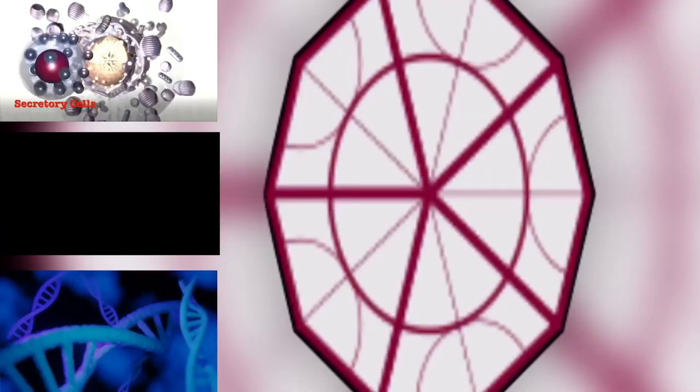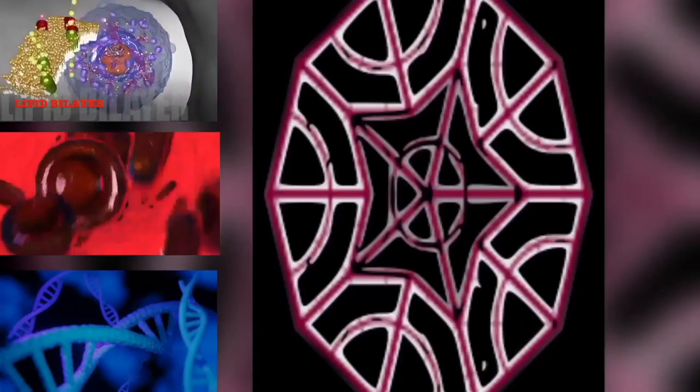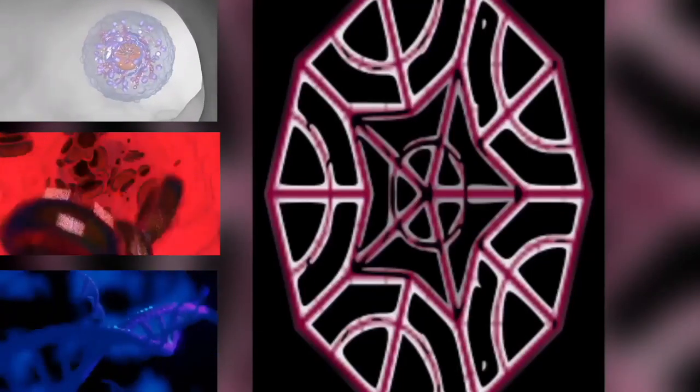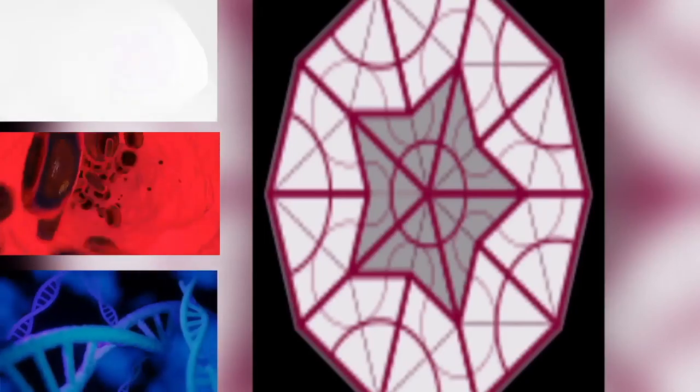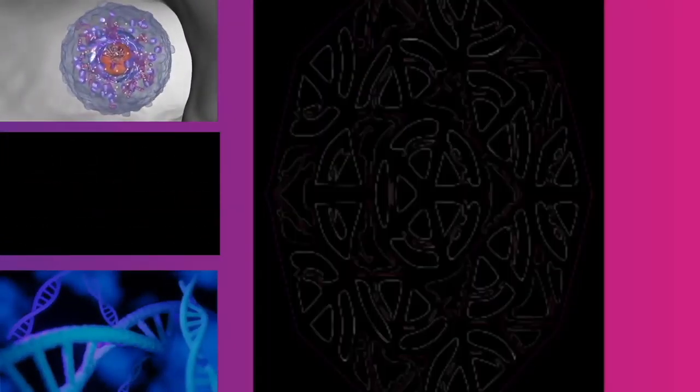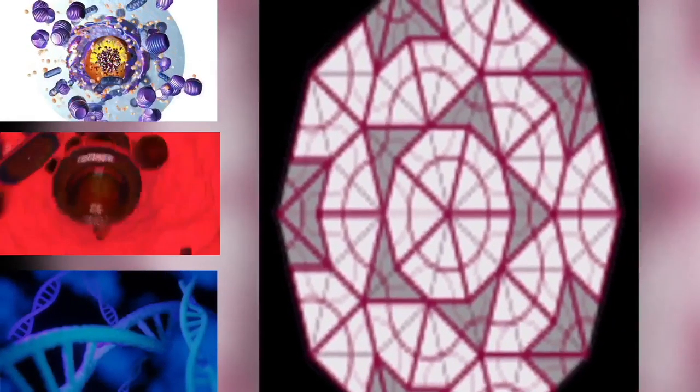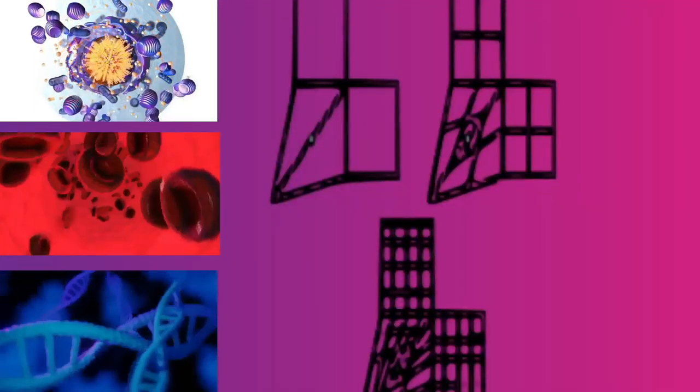The cells of higher plants, such as the flowering plants, lack centrioles. Instead, microtubules form a spindle on the surface of the nucleus and are then organized into a spindle by the chromosomes themselves, after the nuclear envelope breaks down. The pre-prophase band disappears during nuclear envelope breakdown and spindle formation in prometaphase.